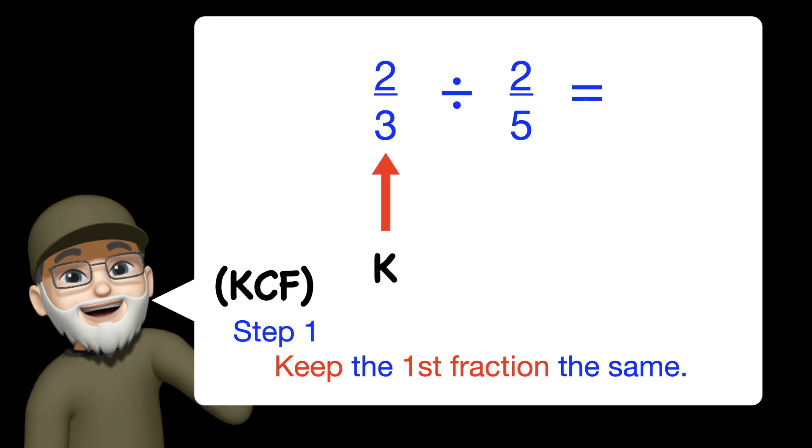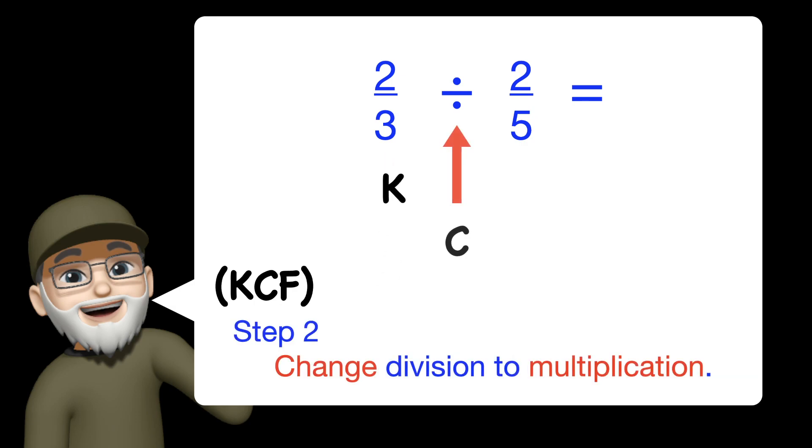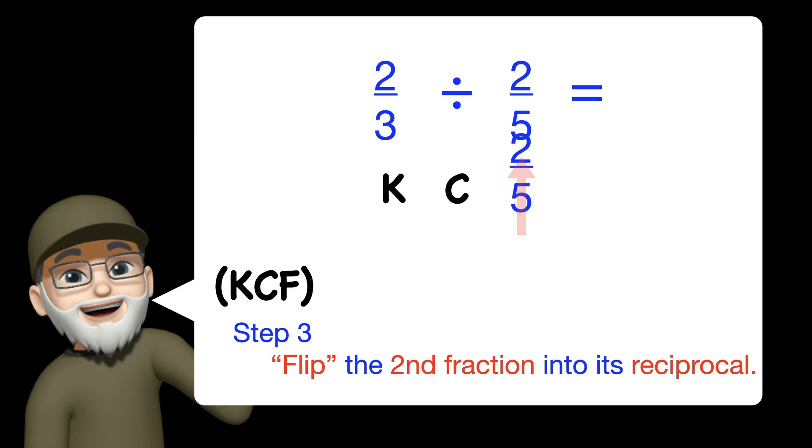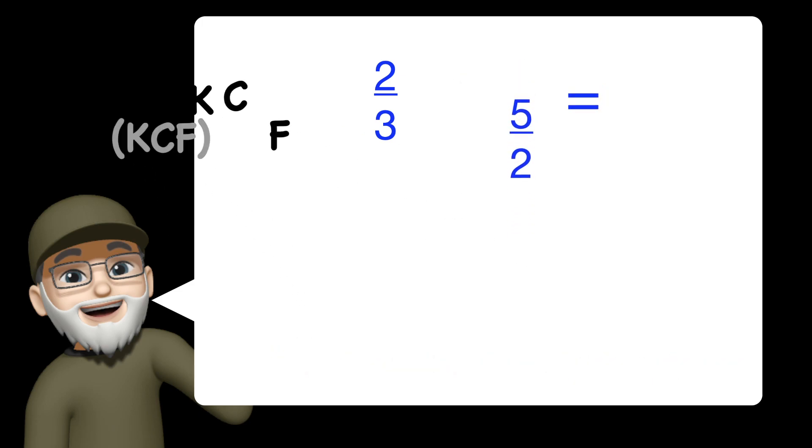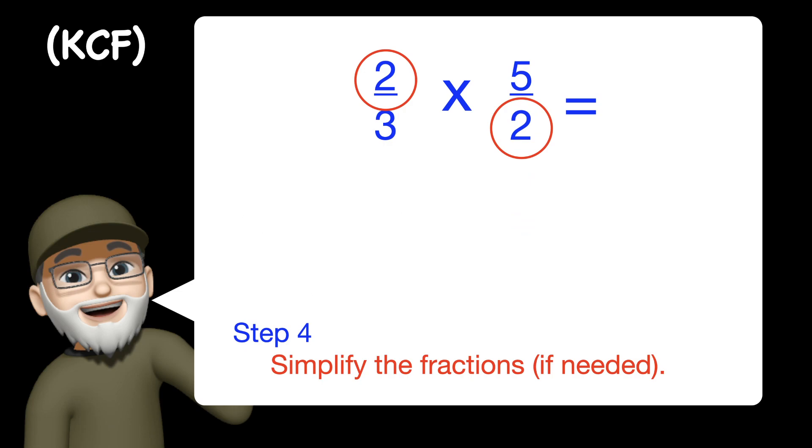Step 1, 2 thirds stays the same. Step 2, we change division into multiplication. Step 3, we flip that fraction into the reciprocal. Next, we're ready to multiply, but I like to simplify.